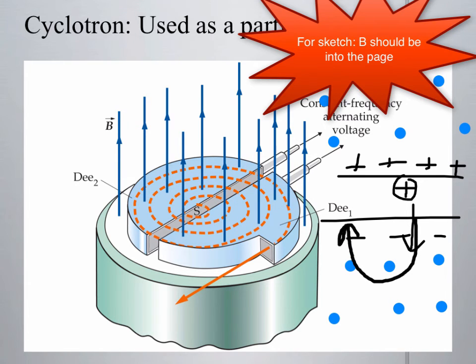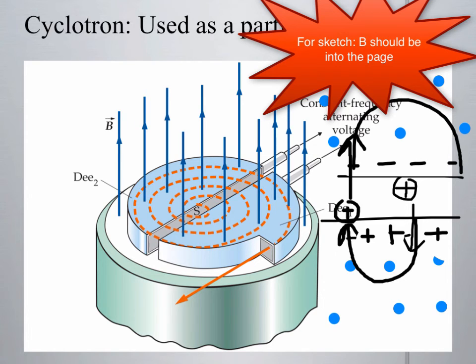So when that charge enters one of the Ds, it feels a centripetal force and arcs its way back around. But when it hits the plate, since we have an alternating voltage here, by the time it reaches the midpoint, the plate has switched its polarity and made one side positive and the other side negative. So that charge then feels an acceleration again and picks up more speed. It enters the magnetic field with a larger speed, and the larger the speed creates a larger arc.